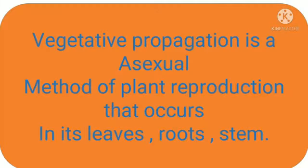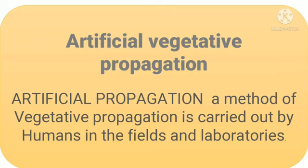Artificial vegetative propagation is an asexual method of reproduction that occurs in leaves, roots, and stems. A method of vegetative propagation is carried out by humans in the fields and laboratories.